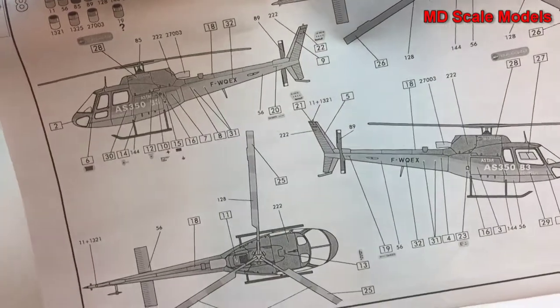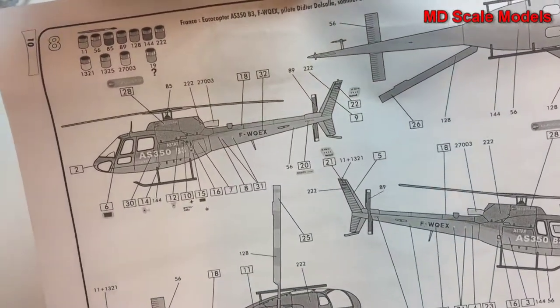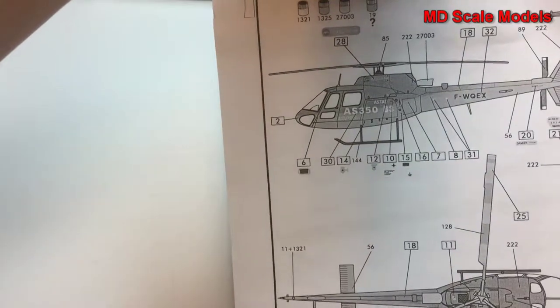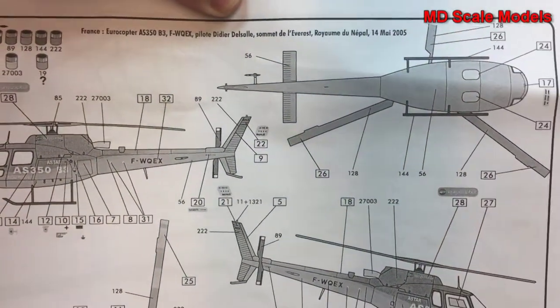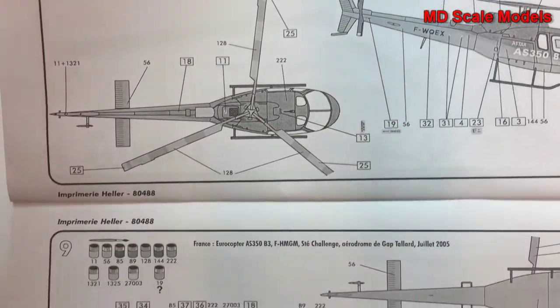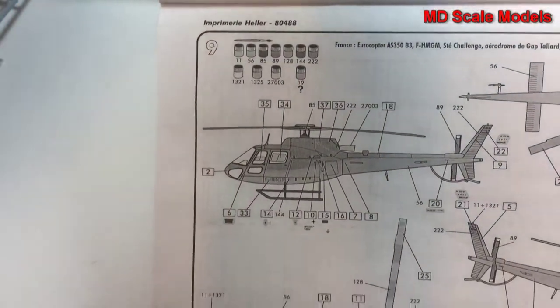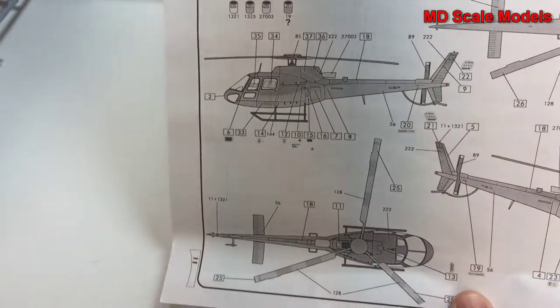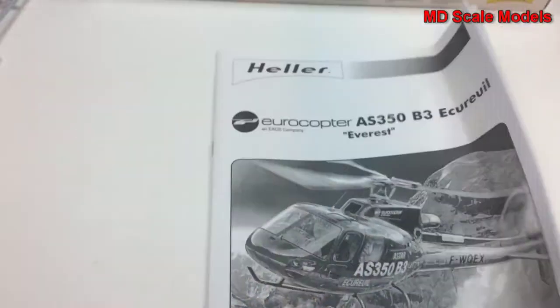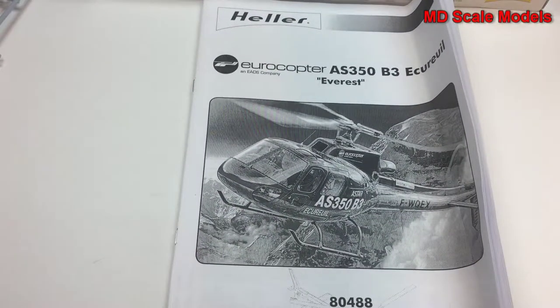We have a painting guide. This looks like this is the Everest version with all those decals. And then there's another version over here. So all in all, it looks like a simple model with some details.